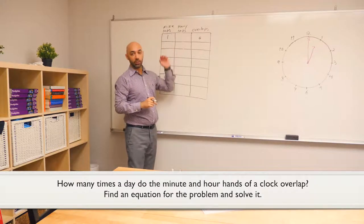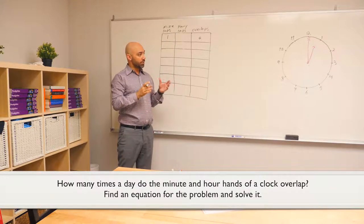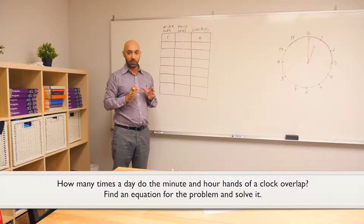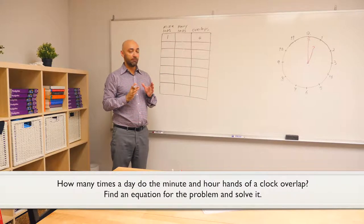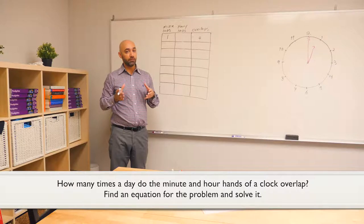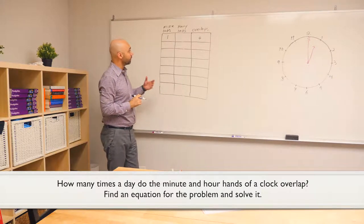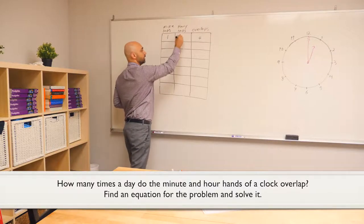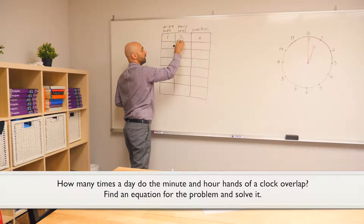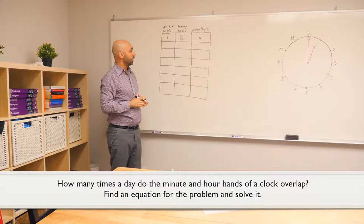But how much did Henry go forward? Well, within one full Mike lap, Henry sweeps a five-minute slice. Now, there's 12 five-minute slices in one full 12 hours. So, the number of Henry laps would be one twelfth of the number of Mike laps.